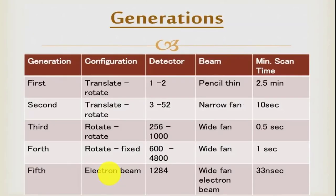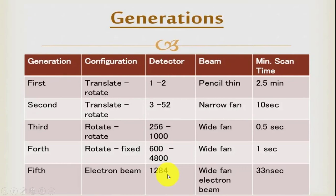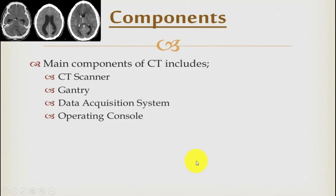These are the generations of CT scan. The most recent is the fifth generation, whose configuration is an electron beam with a scanning time of only 33 milliseconds. It uses 1,284 detectors, whereas the first generation used only 1 to 32 detectors. The components of a CT scan system include a gantry, a data acquisition system, and an operating console.